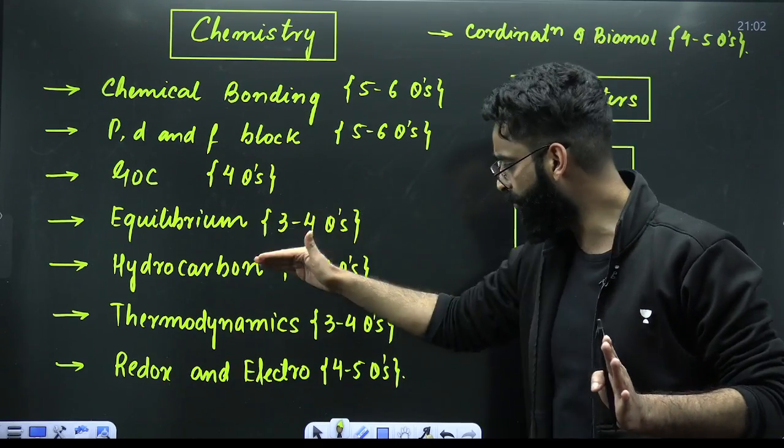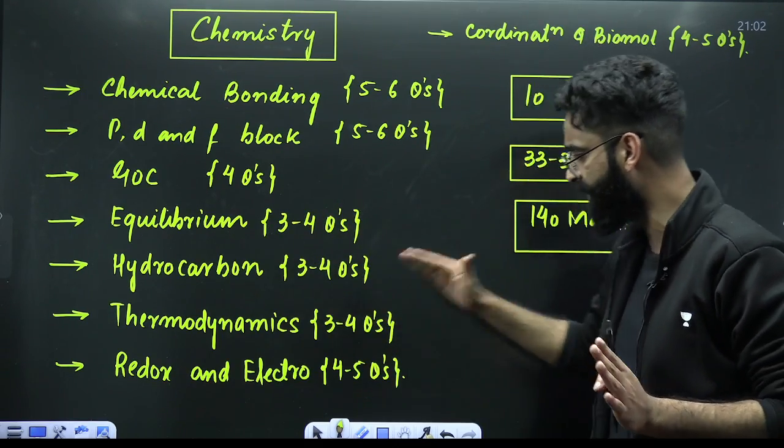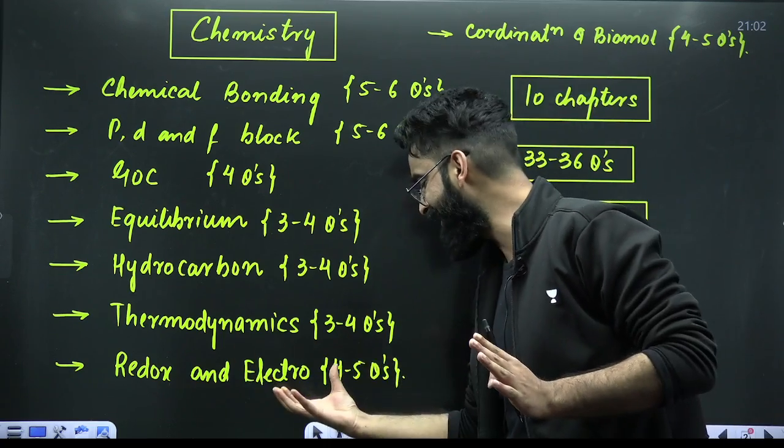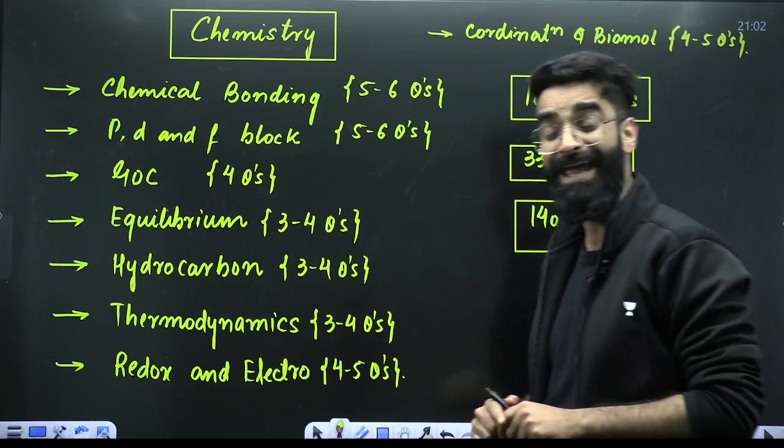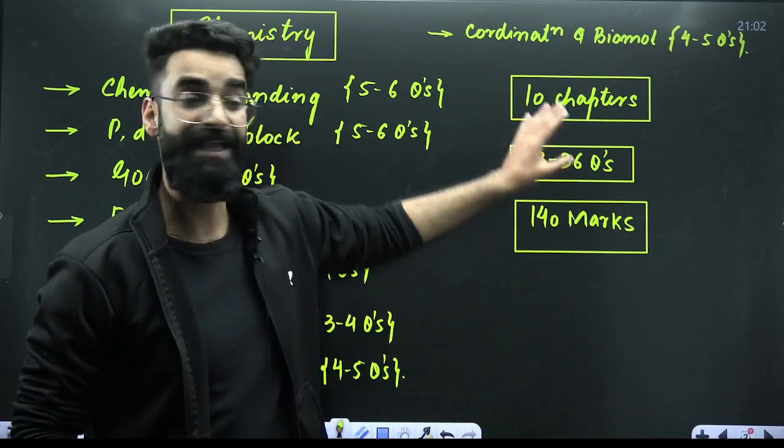Equilibrium, 3 to 4 questions. Hydrocarbons, 3 to 4 questions. Thermodynamics, 3 to 4 questions. Redox and electro, 4 to 5 questions. Coordination and biomolecules, 4 to 5 questions. So in total, these are almost 10 chapters.